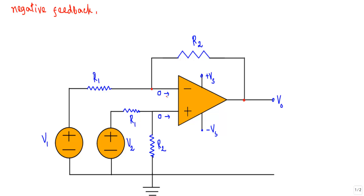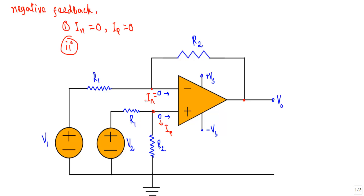When an op amp circuit is in negative feedback, the current through the inverting terminal, In, will be equal to 0. Similarly, the current through the non-inverting terminal, Ip, will also be equal to 0 due to negative feedback. The second golden rule of negative feedback is that it makes the non-inverting terminal voltage Vp equal to the inverting terminal voltage Vn.